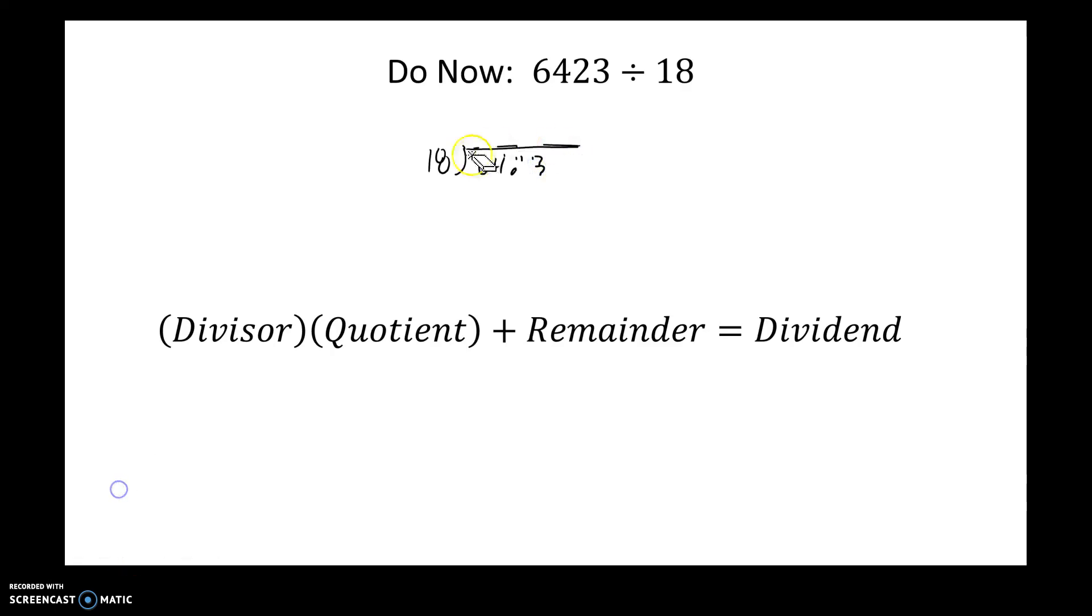Let's try and clean that up a little bit. All right, 6423 divided by 18. Okay, to remind you of the parts of this, this is called your divisor. This piece in here is called your dividend.